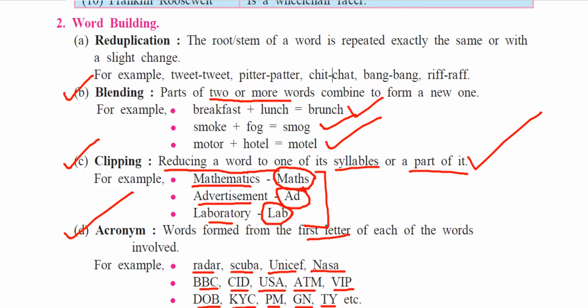USA stands for United States of America. ATM stands for Automated Teller Machine. VIP stands for Very Important Person. NASA stands for National Aeronautics and Space Administration. SCUBA, which we use in SCUBA diving, stands for Self-Contained Underwater Breathing Apparatus. In this way you can find many examples of all these word formation processes.